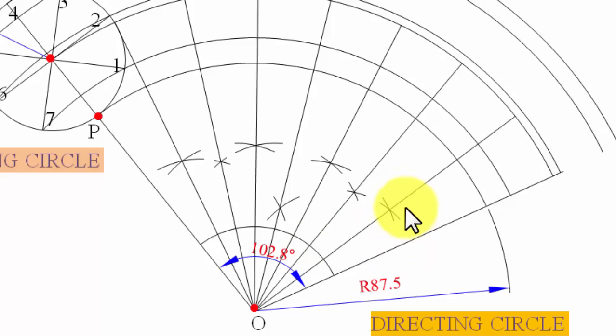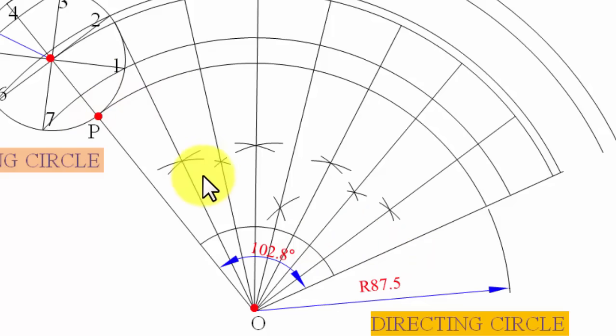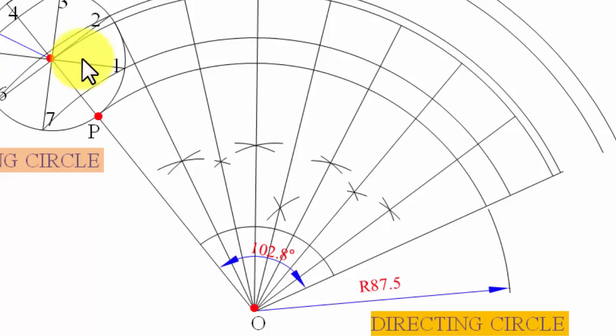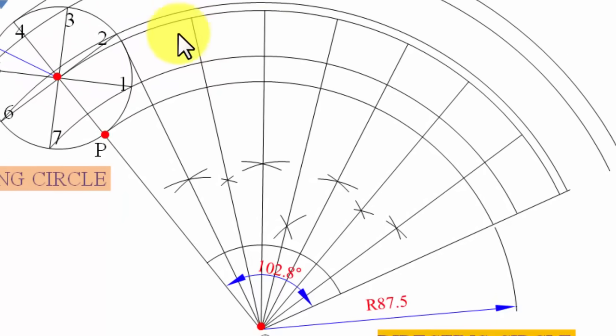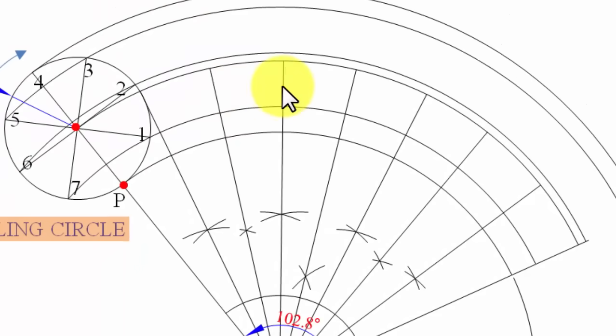All eight division points are now marked on the arc. These represent the successive center positions: the initial center is C0, and then C1, C2, and so on up to C8, corresponding to each one-eighth revolution of the rolling circle.